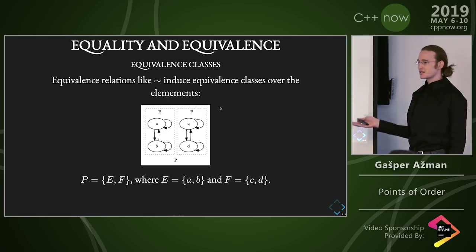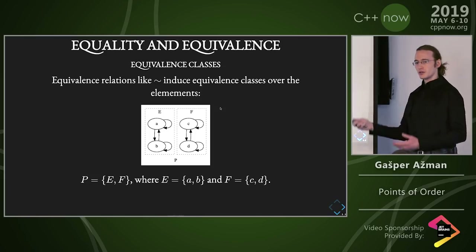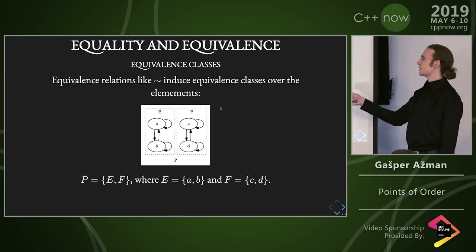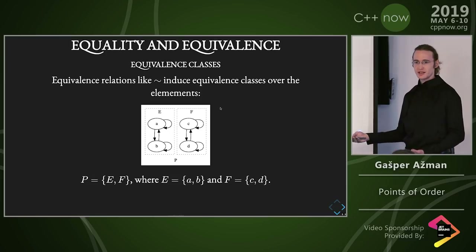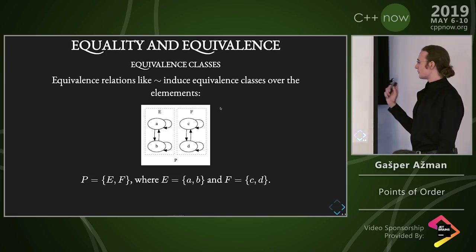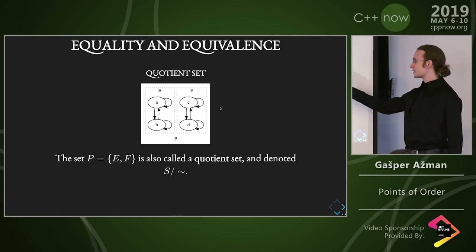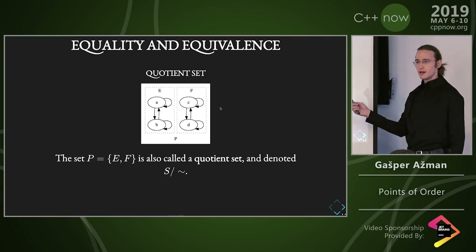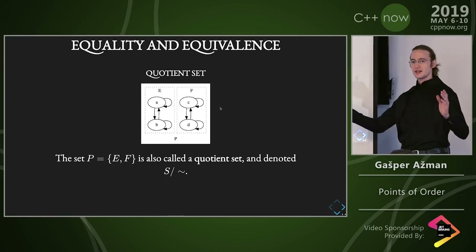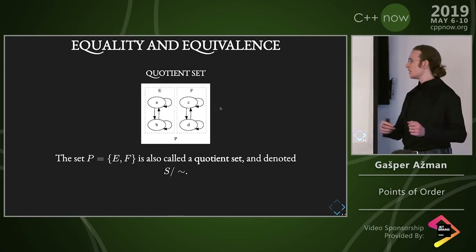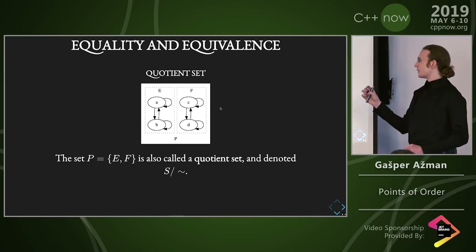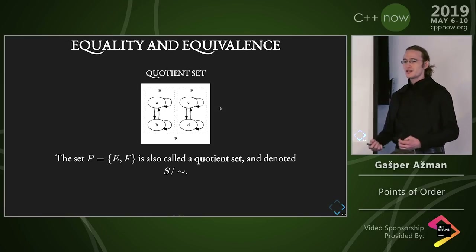Equivalence classes are really nice. I also want to introduce some nomenclature: equivalence relations induce equivalence classes over sets. And that's really important because then we can do a quotient set. So we have the original set S that contained A, B, C, and D, and we partition this set into equivalence classes using squiggle.